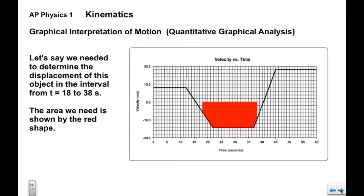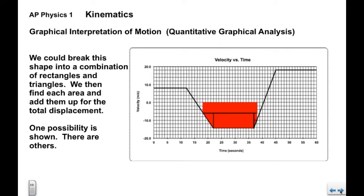For example, the displacement from 18 to 38 seconds is a pretty complicated shape. We break it up into a combination of rectangles and triangles — a big rectangle, another big rectangle, a small rectangle, a small triangle, and a bigger triangle. There are other ways to break up this area. If you want to give it a shot, now would be a good time to pause. As it turns out, the total area is negative 262 meters in this interval.